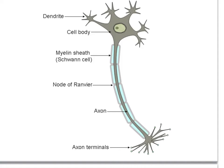Let's have a quick look at neurons, how nerve impulses travel down them, and action potentials.